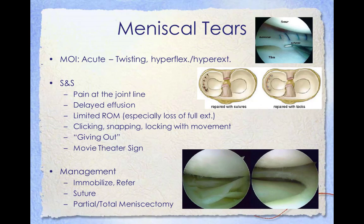A meniscus tear is usually caused by twisting or turning quickly, often with the foot planted while the knee is bent, and can also occur when lifting something heavy. As you get older, your meniscus gets worn and can tear more easily. Signs and symptoms include pain at the joint line, delayed effusion, limited range of motion especially a loss of full extension, clicking, snapping or locking with movement, feeling of the joint giving out, and the movie theater sign — knee pain after prolonged sitting. Management includes immobilization and referral. Small tears may be managed conservatively; more serious tears may require surgery including suturing the meniscus or, if an avascular portion is damaged, a meniscectomy to remove part or all of the damaged tissue.